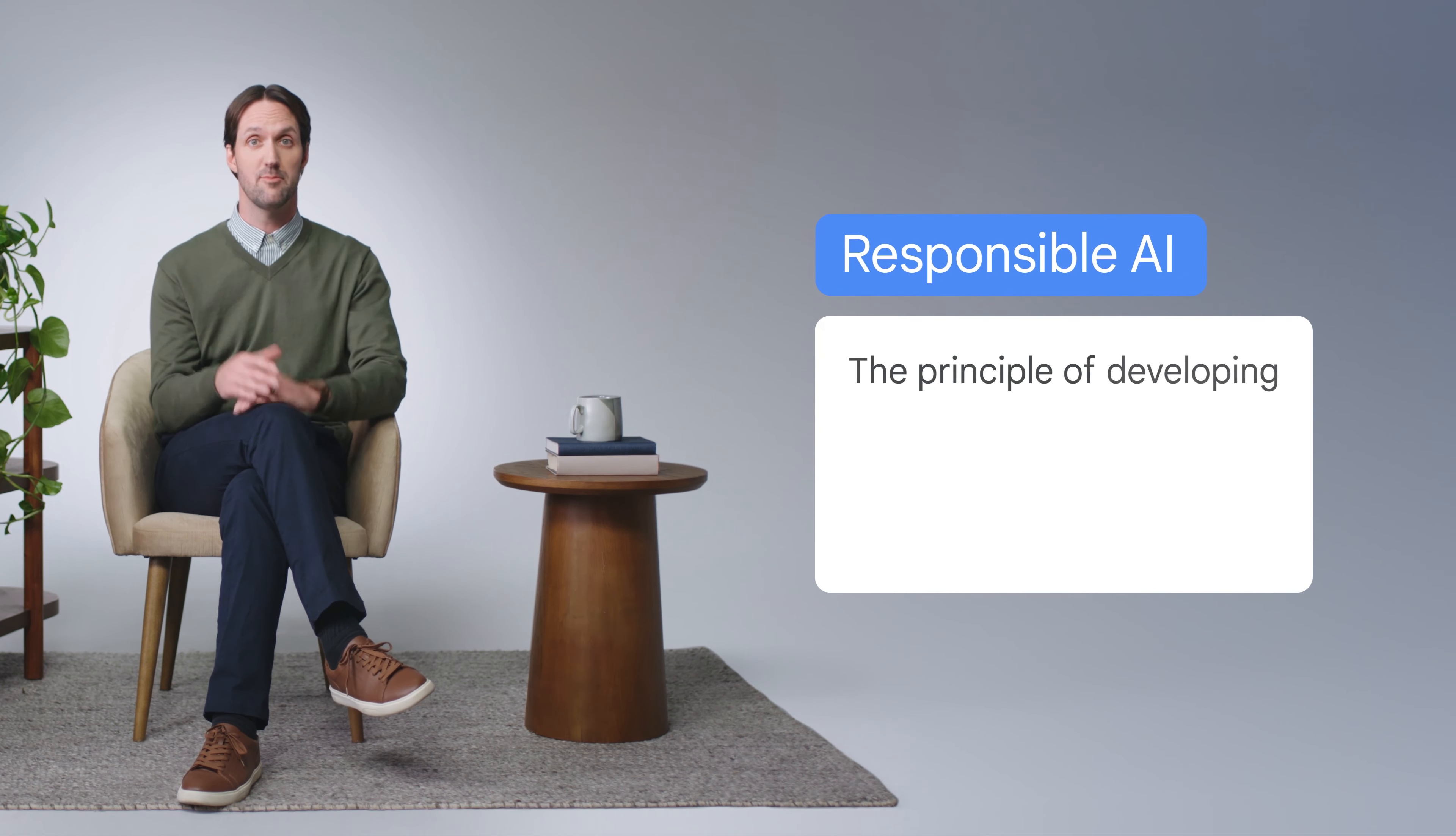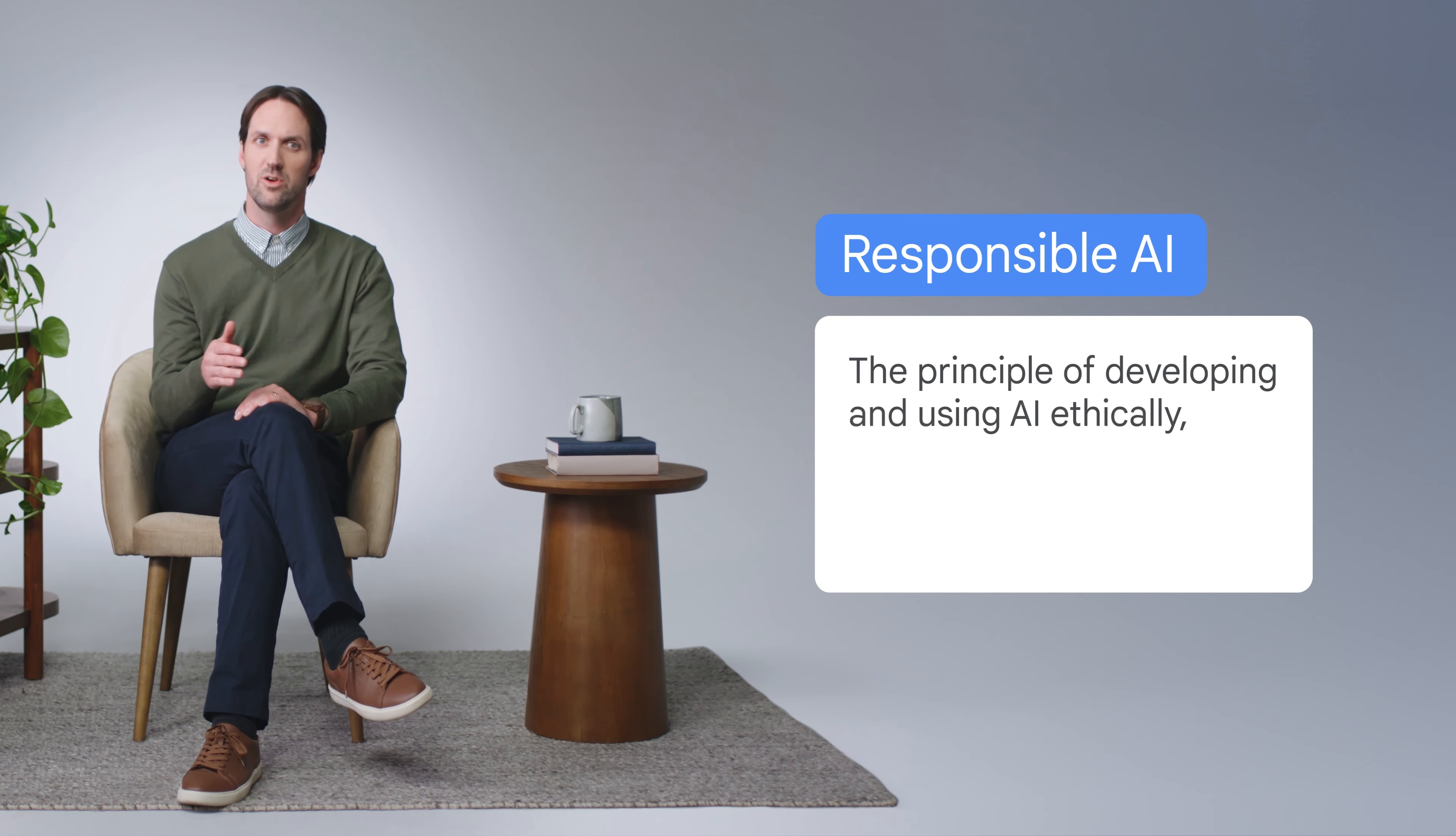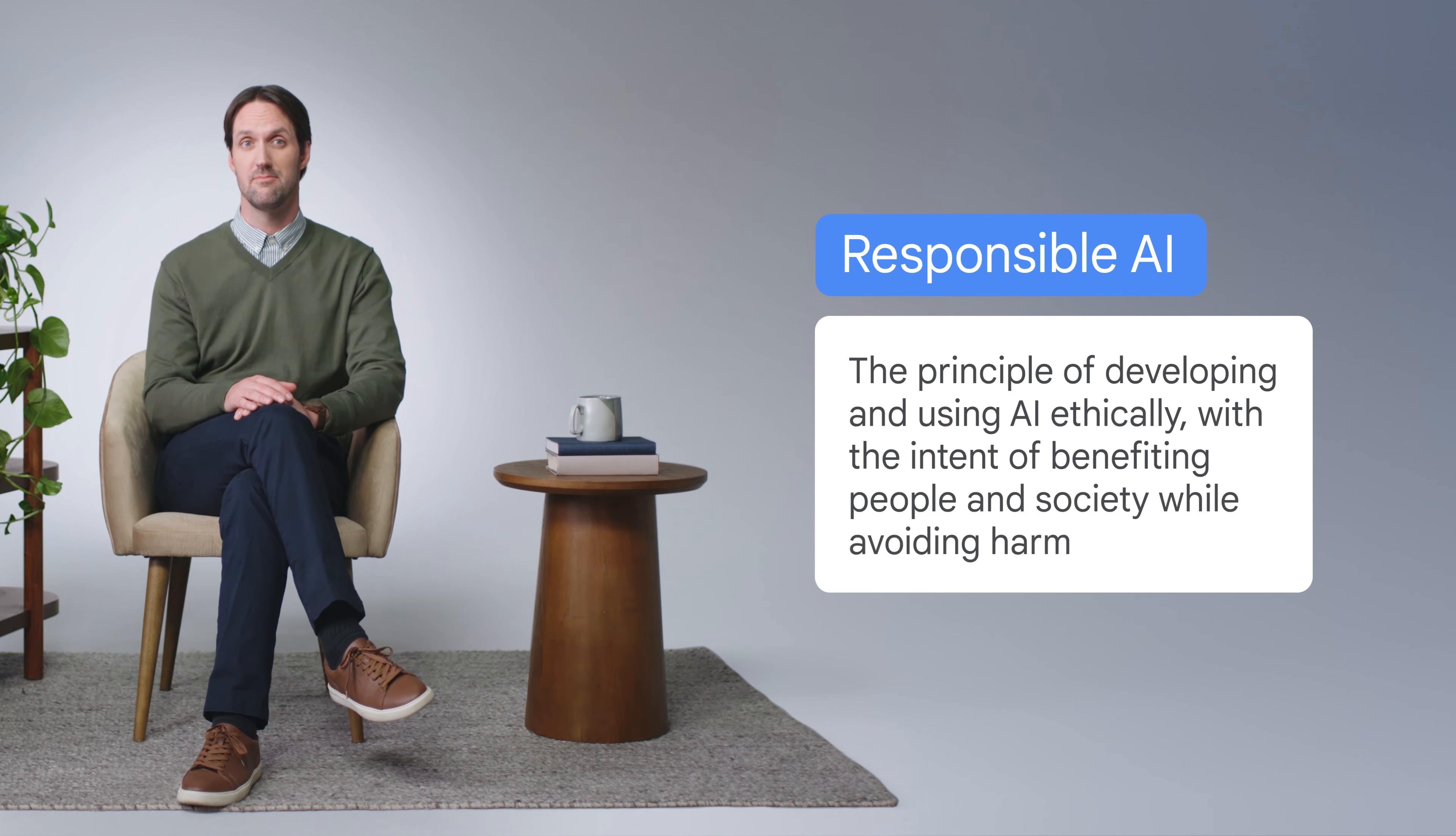Oversight is essential to ensure quality and accuracy when using AI tools. A human-in-the-loop approach blends the efficiency of AI tools with human insight that's critical for practicing responsible AI. Responsible AI is the principle of developing and using AI ethically, with the intent of benefiting people and society while avoiding harm. It's important for businesses, customers, and employees alike to ensure that they use AI responsibly.